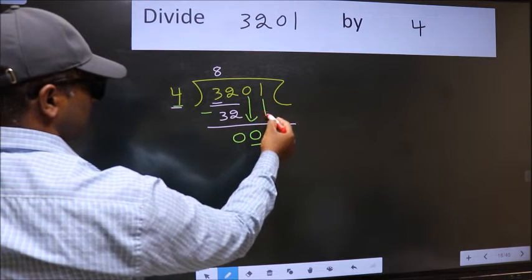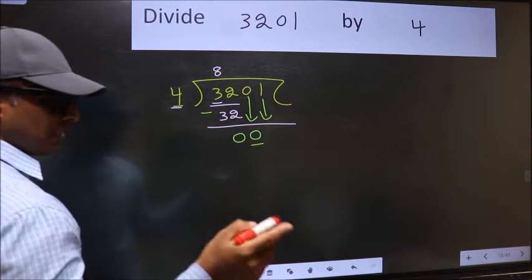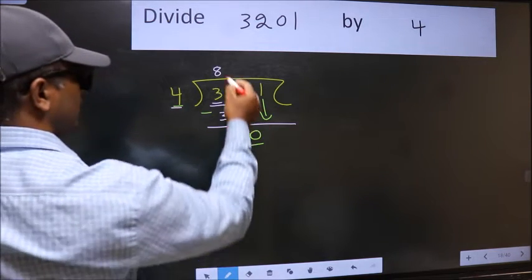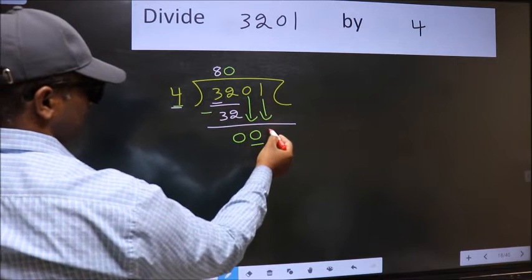So, we should bring down the second number. And the rule to bring down the second number is, we should put 0 here. Then only we can bring down the second number.